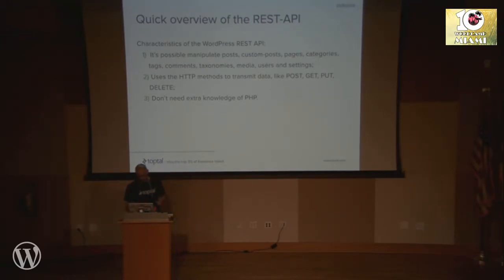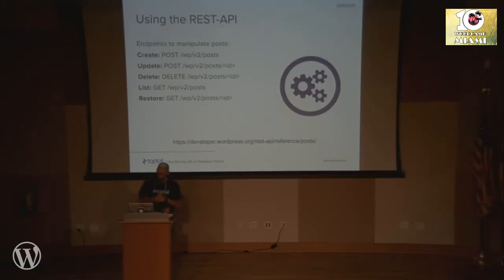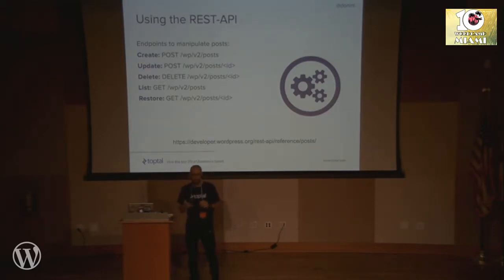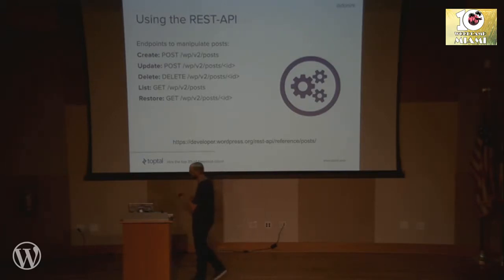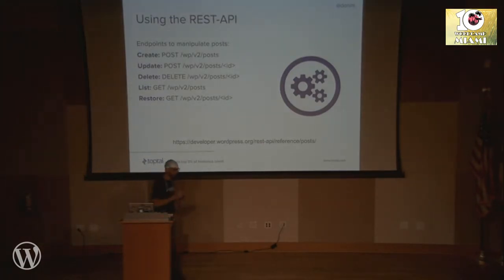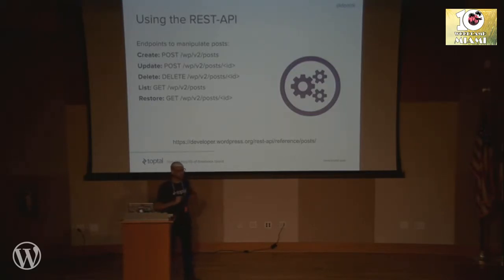The WordPress REST API is very simple, similar to any other REST API. We can create, update, delete, and list things. The REST API uses HTTP methods like POST, GET, PUT, and DELETE to perform actions inside WordPress. I used two endpoints for this presentation: the posts endpoint and the media endpoint to upload the picture the camera takes.